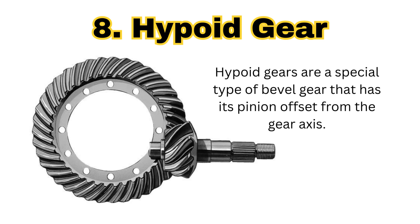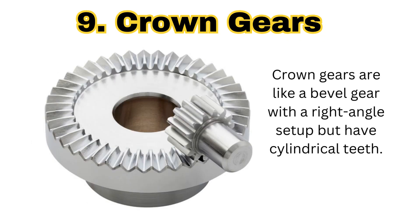The next gear type is the hypoid gear. Hypoid gears are a special type of bevel gear that has its pinion offset from the gear axis. You will find this type of hypoid gear in the axle of the vehicle. Hypoid gears provide better space efficiency and torque transmission.